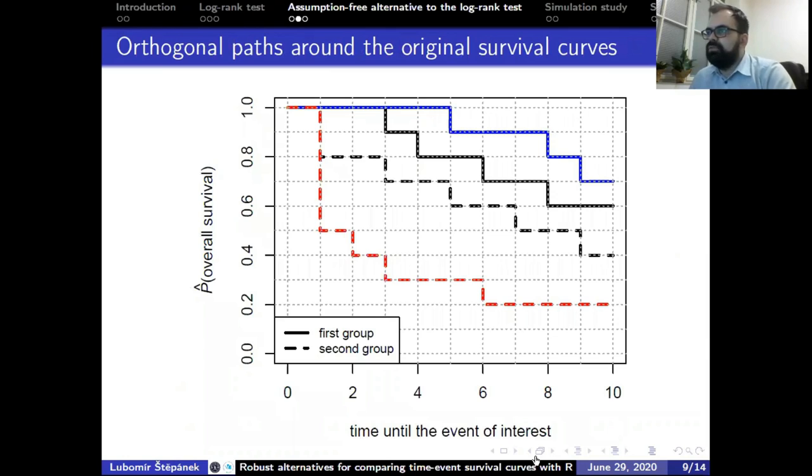Here we can see two time-event survival curves in a survival plot marked by both lines, and an example of a pair of monotonic orthogonal paths above the blue dashed line and below the red dashed line, the original survival curves. So, this pair of paths is more extreme than the original curves and is therefore contrary to the null hypothesis.